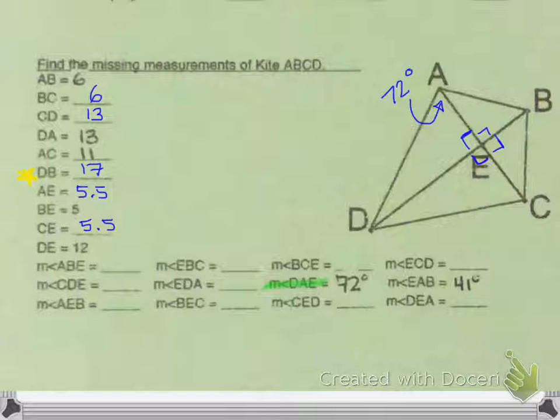They also gave me EAB. That's this one right here, and that one is 41. Knowing these angles is going to help me find a lot of other angles in this kite. So what I'm going to do is I'm going to find a bunch of these other angles, and then I'll fill them in.